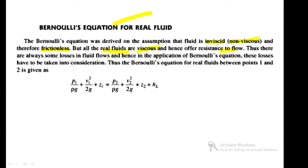At section 1, the energy is P1/(ρg) + V1²/(2g) + Z1, and at section 2 it is P2/(ρg) + V2²/(2g) + Z2 plus HL. HL is the head loss — the difference in energy between the two sections. Section 1 is the inlet with maximum energy; after losses, section 2 has less energy. The difference is called the head loss due to friction.